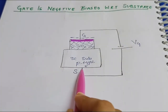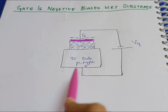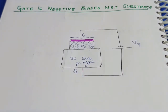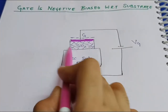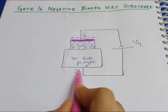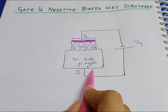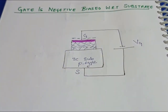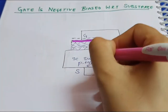Since the gate terminal is negatively biased, negative charges are created at the upper layer and positive charges are created at the bottom layer, because it is a capacitor with two conducting layers and a dielectric in the middle. Positive charges are created, causing an electric field intensity to be induced in the upward direction.